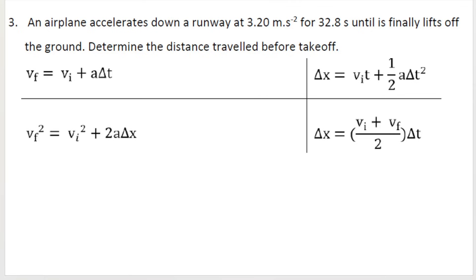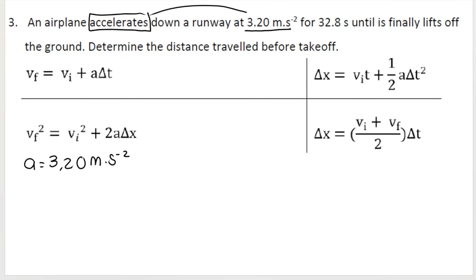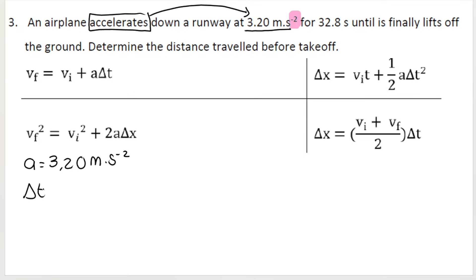I've got an airplane accelerating down a runway at 3.2 meters per second squared. So acceleration is 3.20 m/s². The word 'accelerates' and the unit — meters per second with a negative two exponent — tell us this is acceleration, not velocity. This airplane takes 32.8 seconds until it finally lifts off the ground. Determine the distance traveled before takeoff.